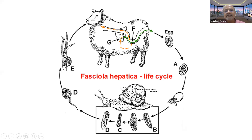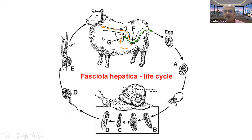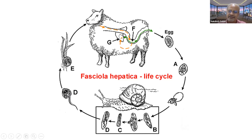Eventually, the cercarial stages are released from the snail. They encyst on the grass blade and these stages are called metacercarial stages. Sheep, goat, cattle, and buffaloes acquire infection by grazing on the contaminated pasture and consuming these metacercarial stages — that is how they acquire the infection.